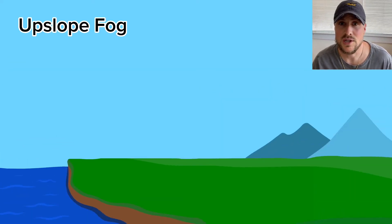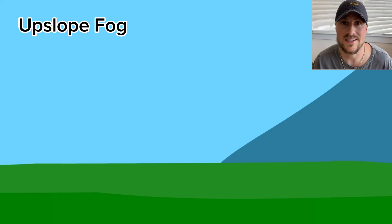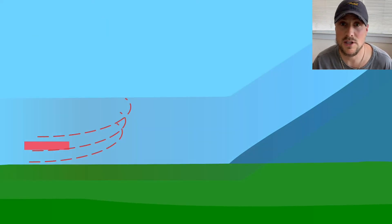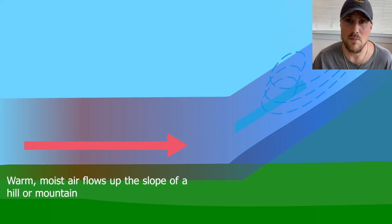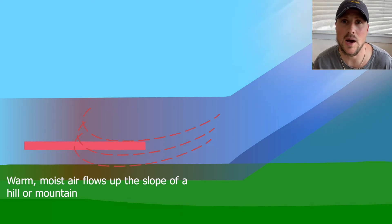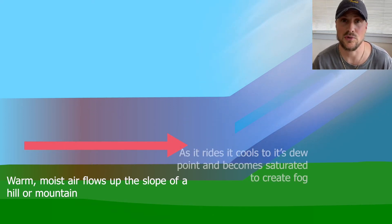The last fog we will talk about is very common near mountains and this is upslope fog. Upslope fog forms when warmer and more moist air is forced up sloping terrain to altitudes of cooler air.